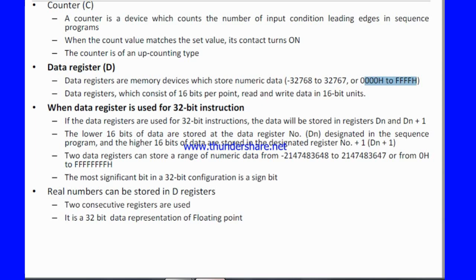If the data register is used for a 32-bit instruction, the data will be stored in register DN and DN plus one. I will explain this also in programming. The lower 16 bits of the data are stored in the designated data register DN, and the higher 16 bits are stored in the designated register number plus one. Real numbers can also be stored in data registers using two consecutive registers as a 32-bit floating point representation.